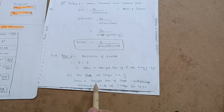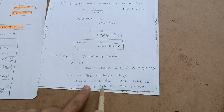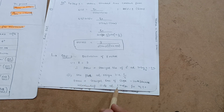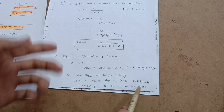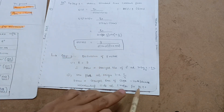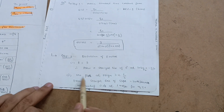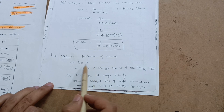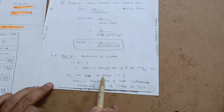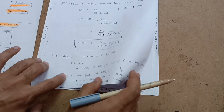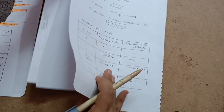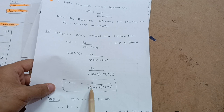The frequency always starts from zero and ends at infinity. After discussing K, when you start the next factor - one pole at origin, one zero at origin - the frequency ωc always starts from zero. This completes the second part: one pole at origin. Next is the simple pole: 1/(1 + 0.5s).